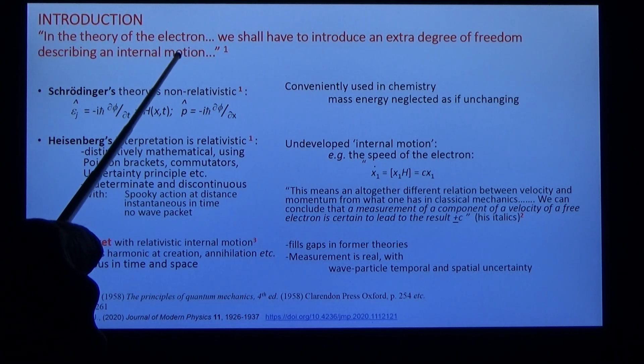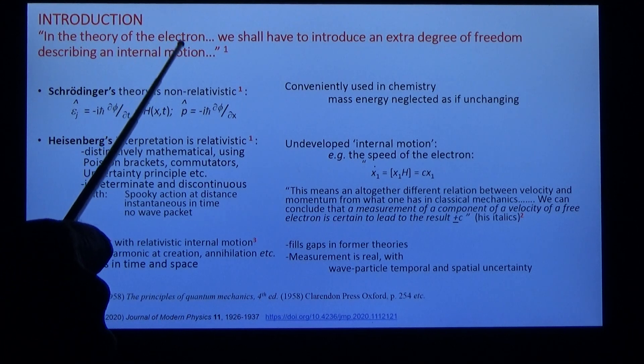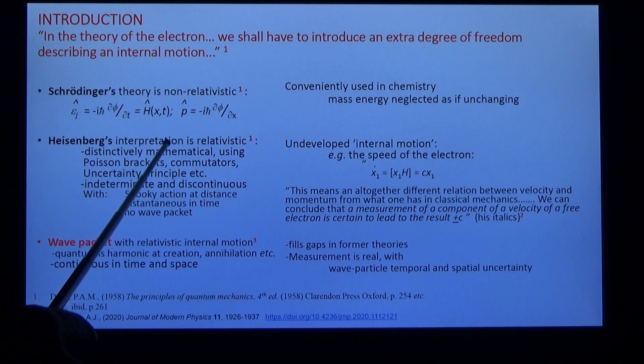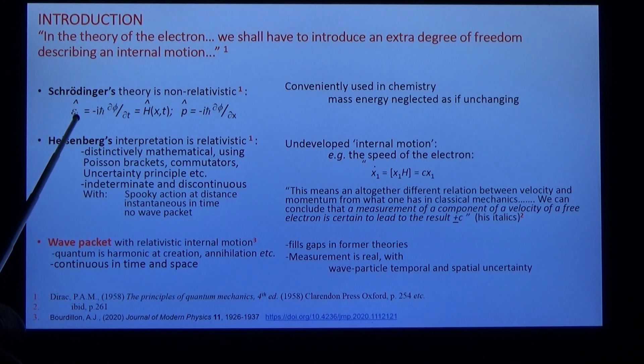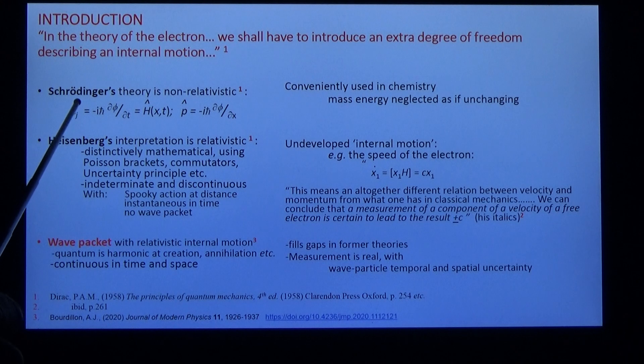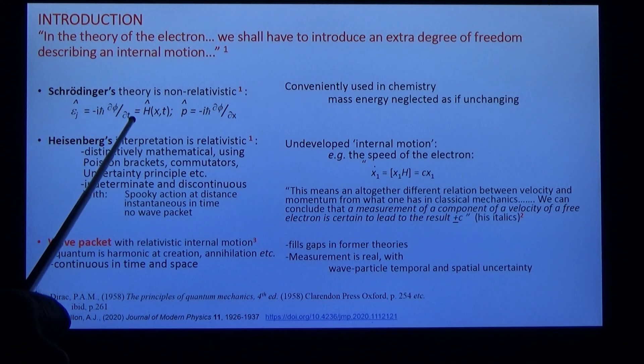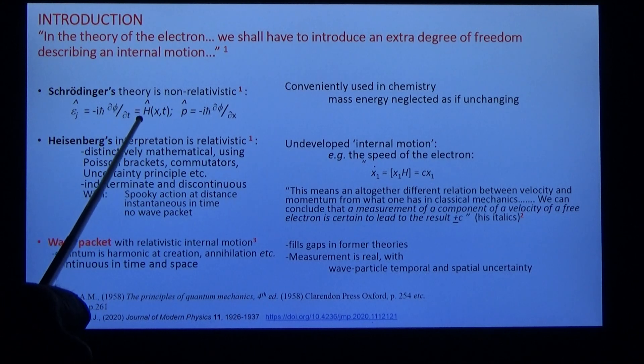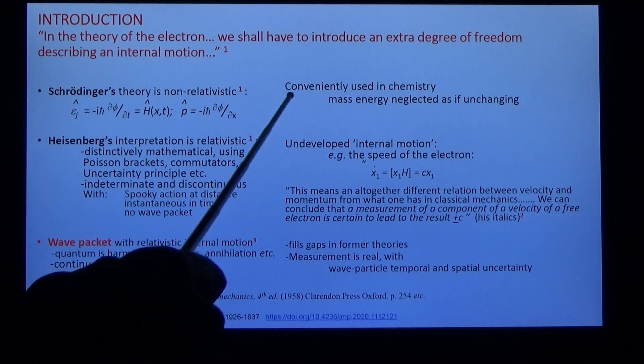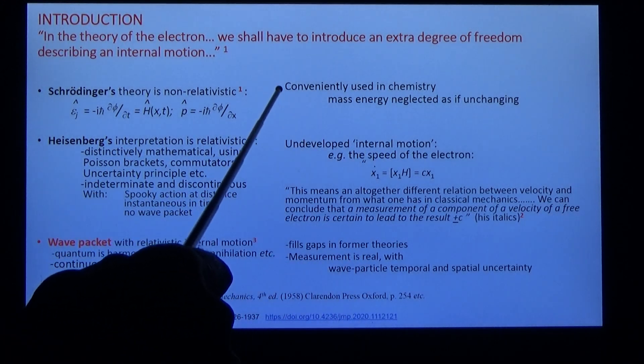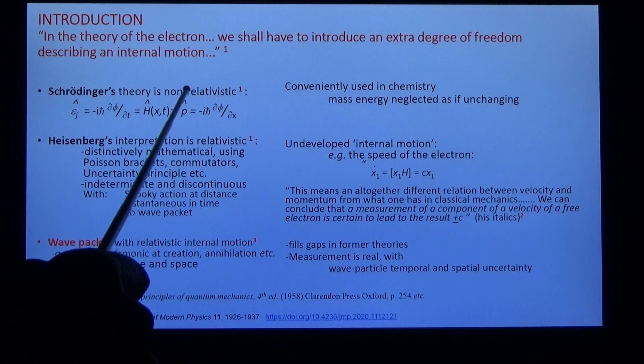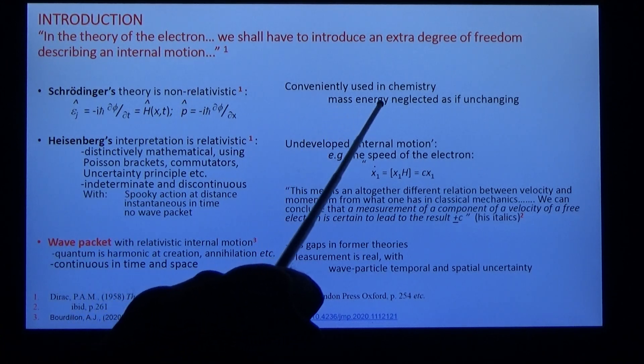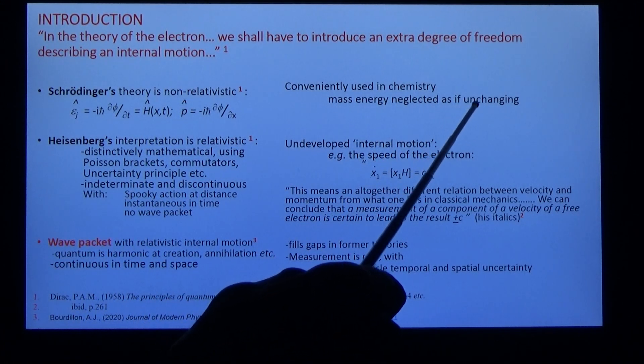I'm going to ask you to consider the wave packet as the origin of internal motion, which we will apply to Schrodinger's theory and Heisenberg's interpretation. Schrodinger's theory allows you to calculate eigenstates of a Hamiltonian matrix, convenient in calculating chemistry phenomena. The theory is non-relativistic because mass energy is taken as constant and ignored.